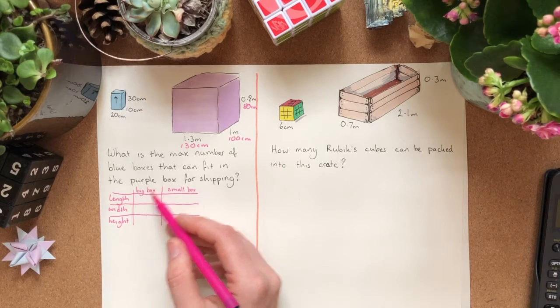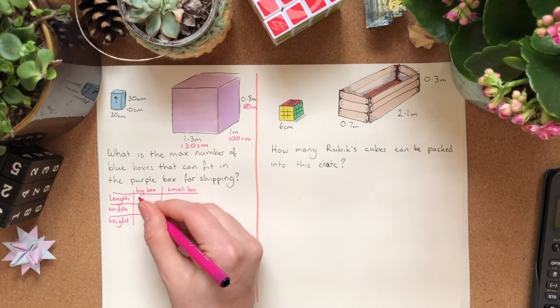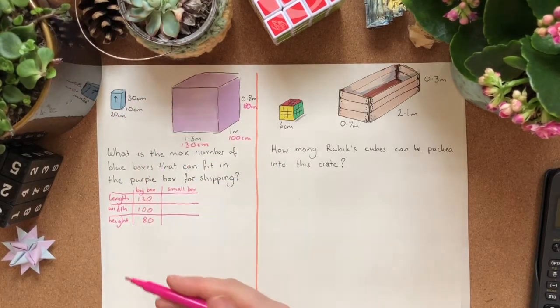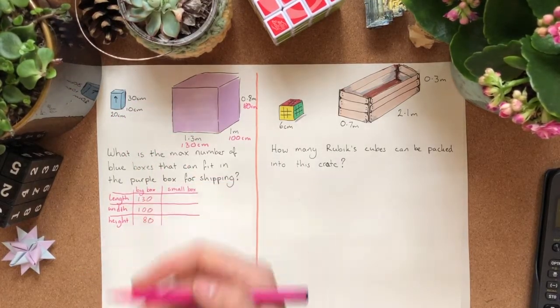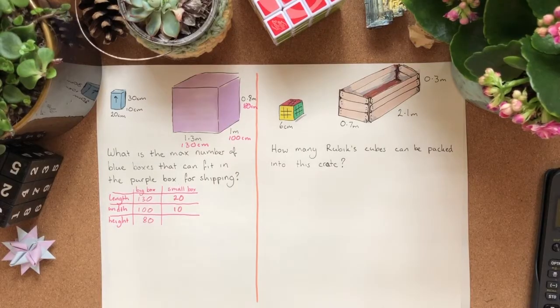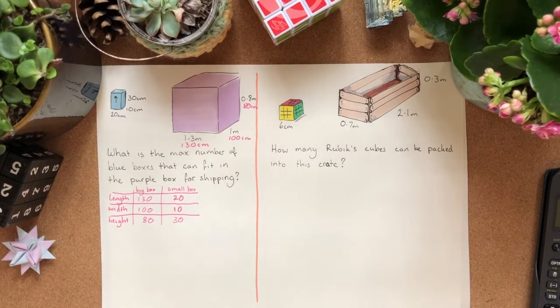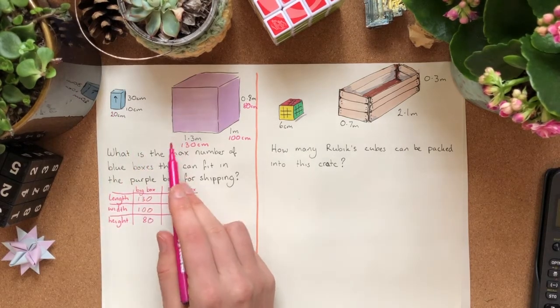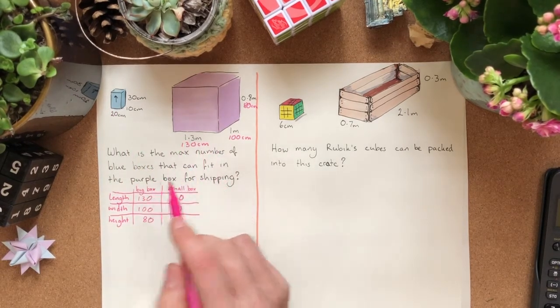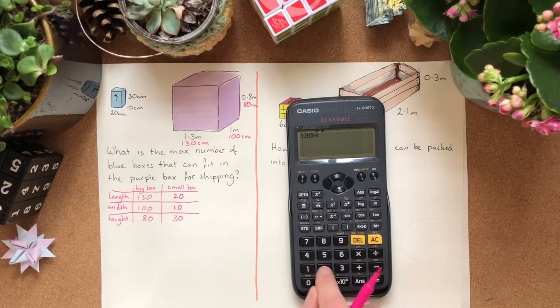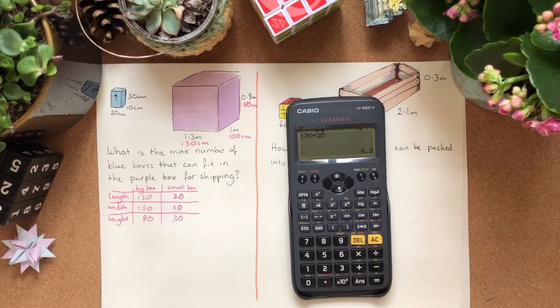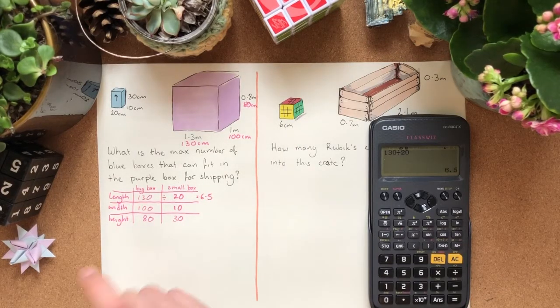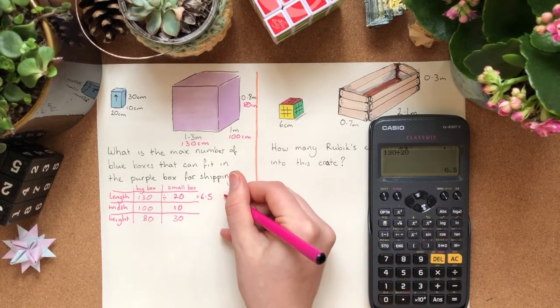So, first of all, on the big box, the length, the width and the height, we've got 130, 100, and 80. When the small box is positioned like this, as it's shown here, the length facing us would be 20. The width is 10 and the height is 30. Okay? And now, to figure out how many of this small box we could fit along the length, we're going to divide them. 130 divided by 20, you probably already know, is not going to be a whole number. It's 6.5. We can't fit 6.5 of a box in, so we're going to have to make that 6. Do it for the rest.